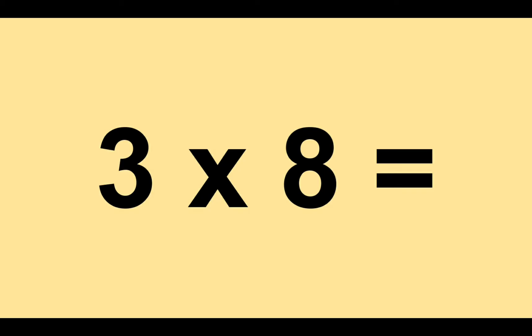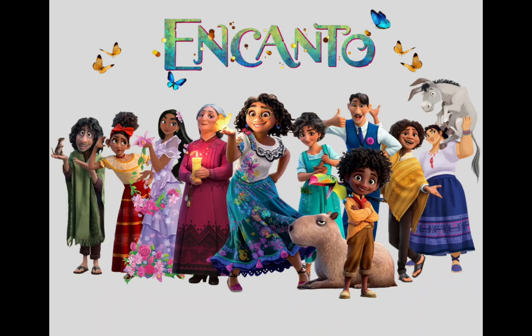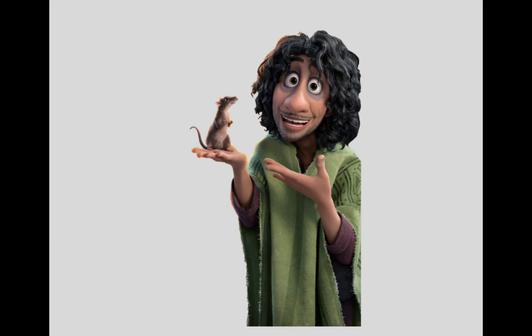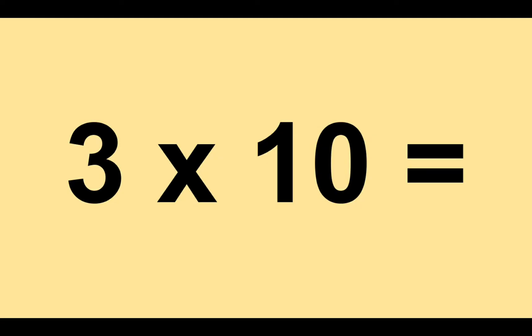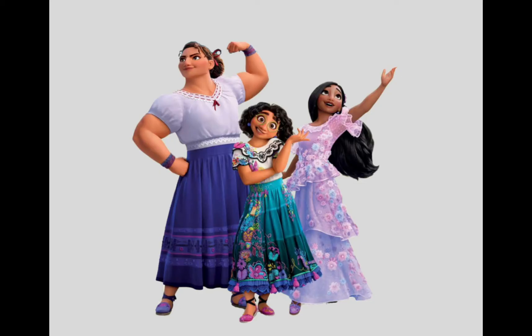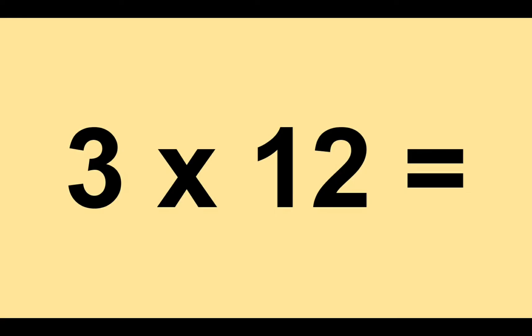Three times eight equals twenty-four. Three times nine equals twenty-seven. Three times ten equals thirty. Three times eleven equals thirty-three. Three times twelve equals thirty-six.